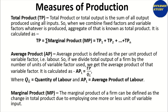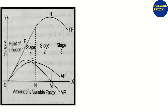Measures of production function: Total product — total output produced by using all the inputs. Average product is total product divided by the variable factor, labor. Marginal product can be defined as a change in the total product due to employing one more or less unit of a variable input.